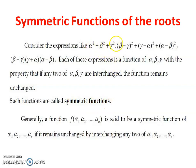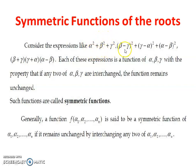In the expression alpha squared plus beta squared plus gamma squared, if we interchange beta and gamma, we get alpha squared plus gamma squared plus beta squared, which is the same value. Likewise, a similar property holds for the other expression. But in the case of (beta plus gamma)(gamma plus alpha)(alpha plus beta), you have to read it correctly for it to be a symmetric function; otherwise it is not a symmetric function.